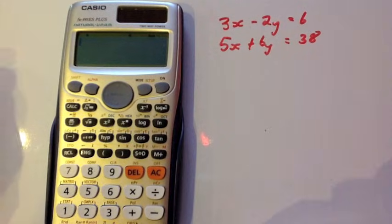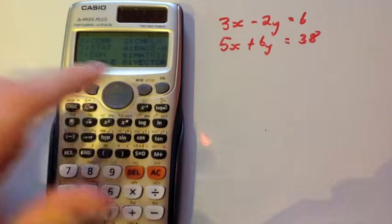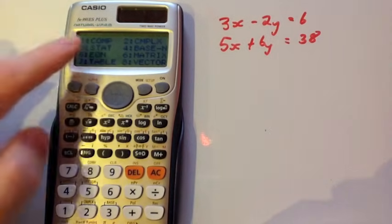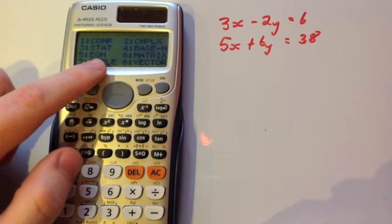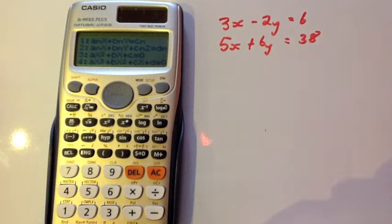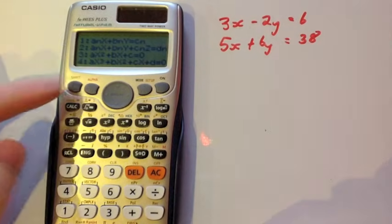To do so, we need to go into equation mode. See where it says mode? Just press that button and you'll see you've got eight modes to choose from. Number five is EQN, which is equation. Press number five and you'll be prompted for what type of equation you want to solve.